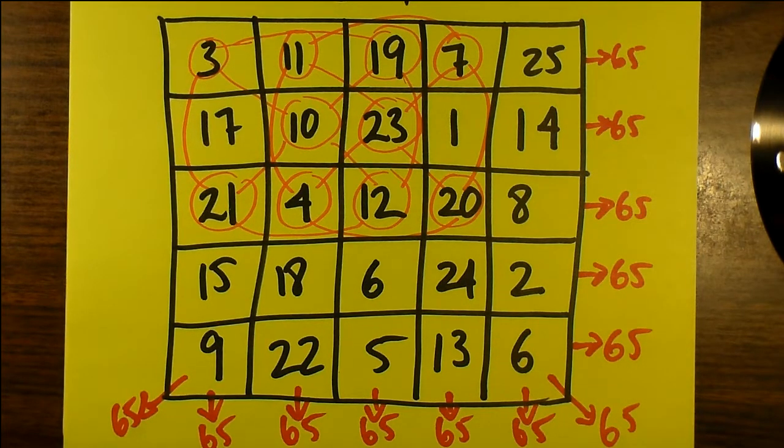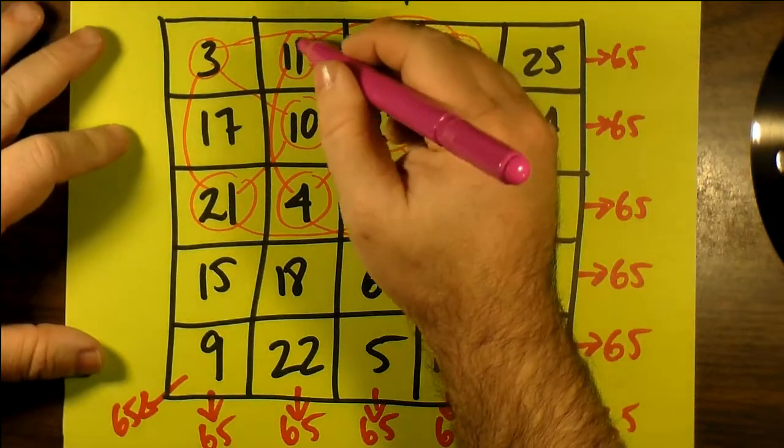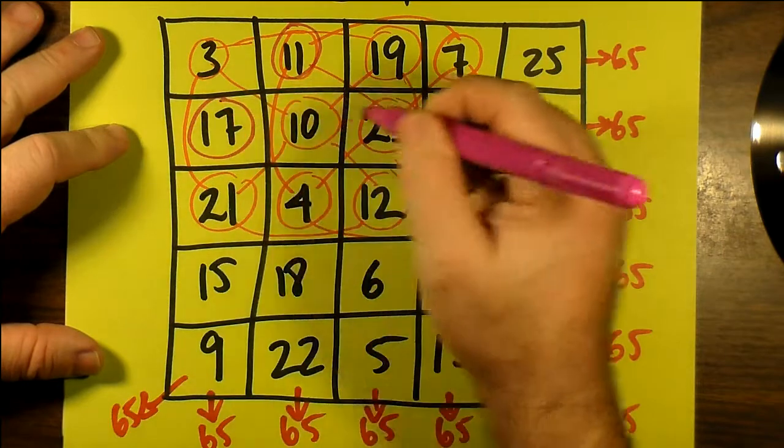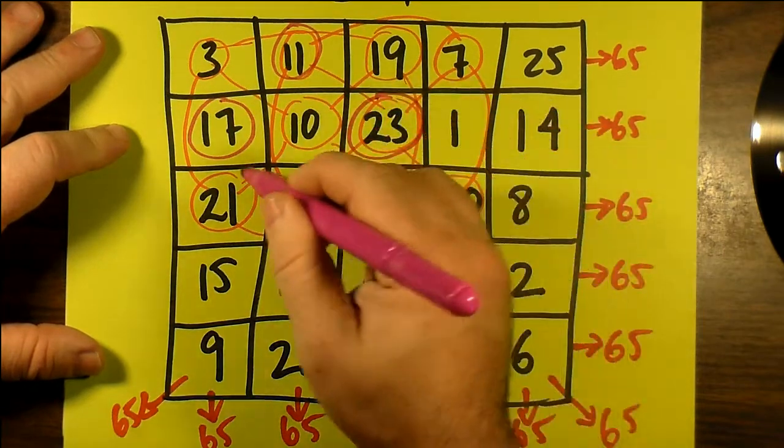Or sorry, not the middle of every, the middle number of every row, but the middle of the top and bottom rows as shown here, and the middle of the left and right rows.